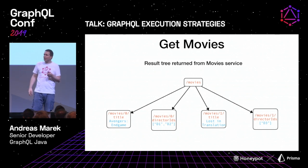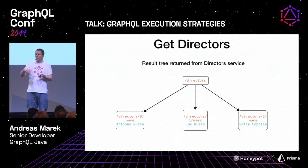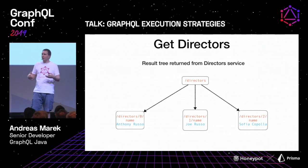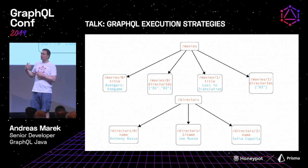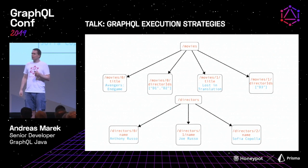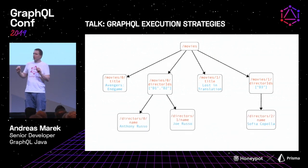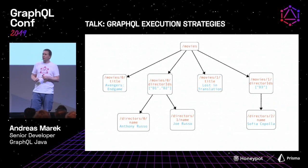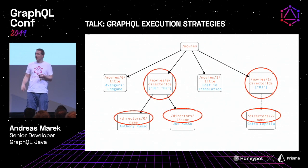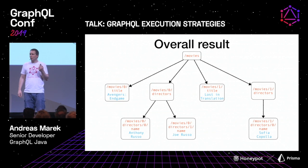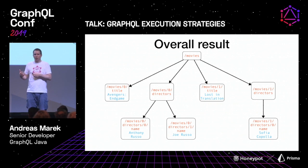The result from the first call to the movie service gives us a tree with a movies top-level node and leaves containing director IDs — not full director objects. We then take those three IDs (d1, d2, d3), feed them into the director service, and get back another tree with three leaves containing the director names. We now have two result trees and need to move the leaf nodes up and combine both trees together.